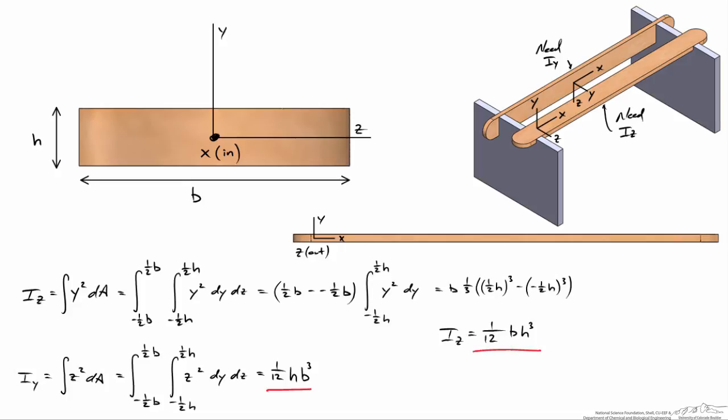And note that because b is larger than h, we'll see a much higher moment of inertia for Iy than we would for Iz, and a higher moment of inertia means that the vertical popsicle stick will bend less than the horizontal popsicle stick.